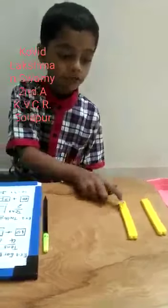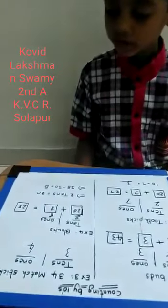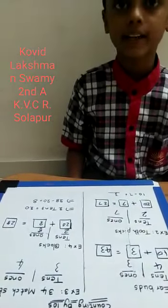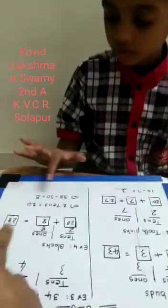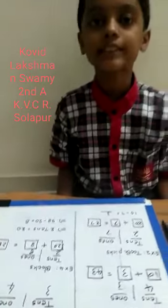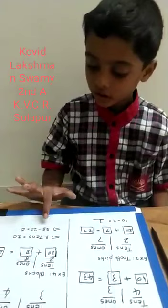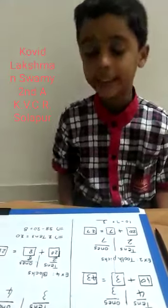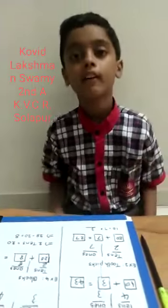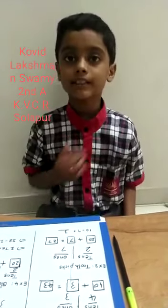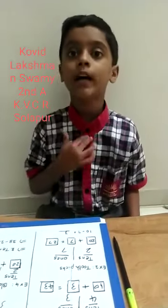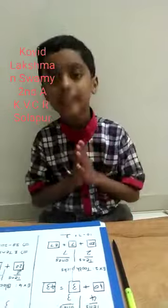1 ten, 2 tens. 2 tens equals 20. 28 minus 20 equals 8. So my sister took 8 blocks. Thank you.